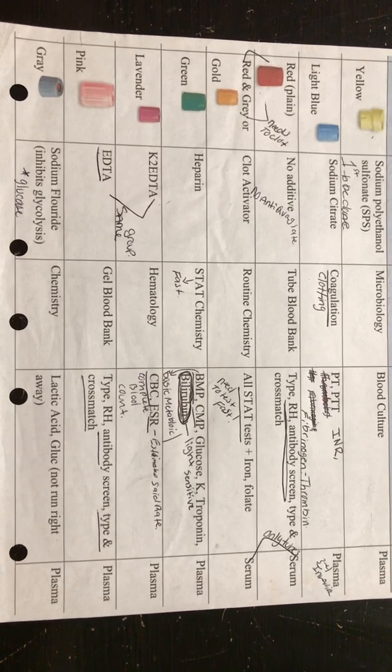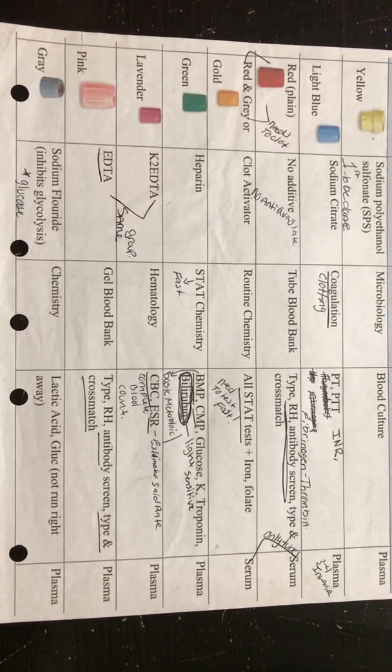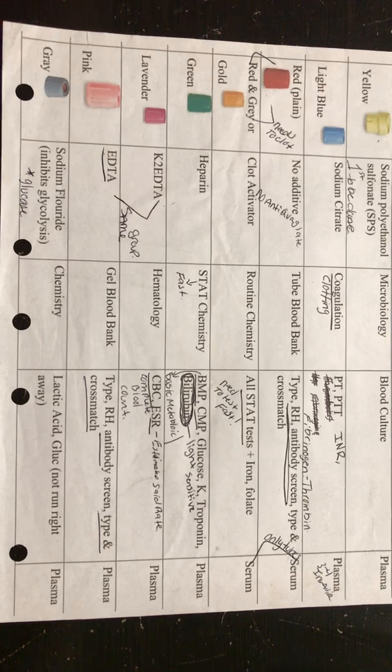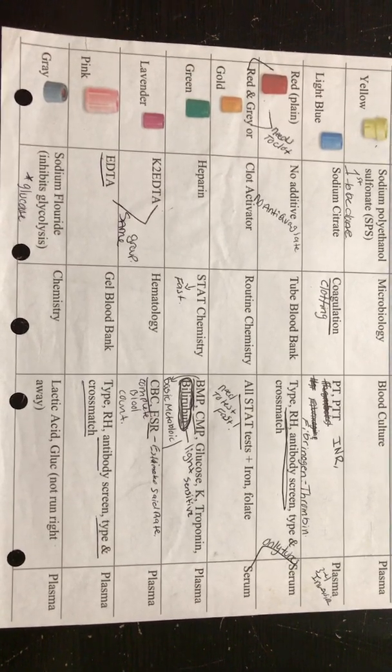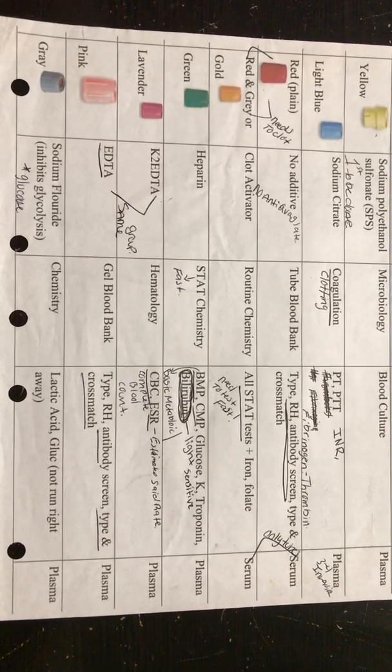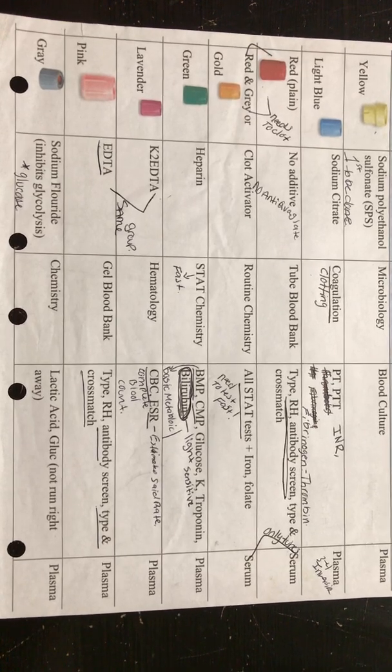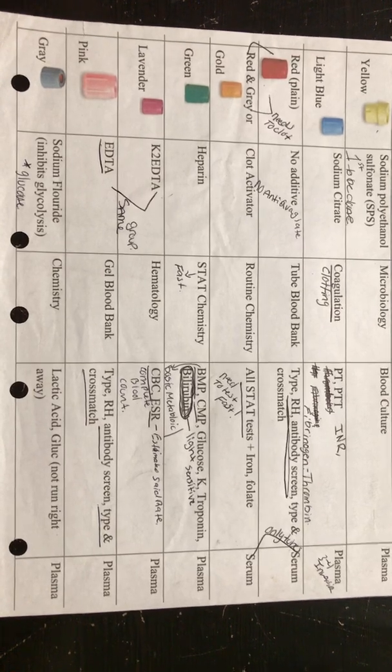If you look all the way to your right, you've got your plasma, plasma, serum, plasma, plasma, plasma. So the only tubes that we're going to test serum in is your red gold tubes. Your main tubes are: light blue, red gold, green, lavender, gray. So blue, gold, green, lavender, gray. That is your order of draw.